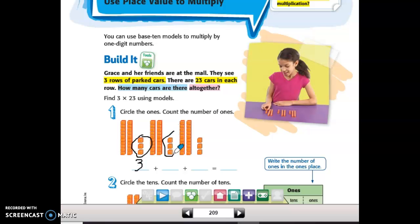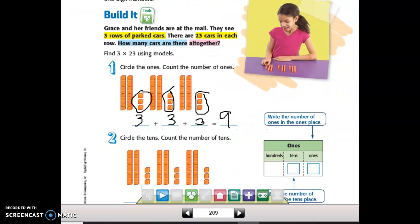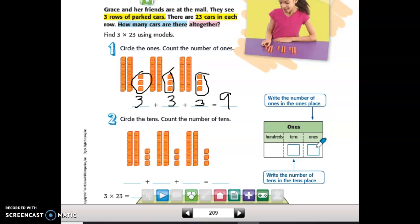Three more ones. And three more here. And repeated addition. Three plus three plus three gives me nine. Nine ones. I'm going to write nine ones in my place value chart.